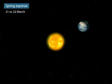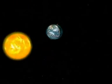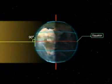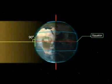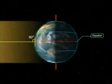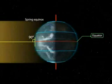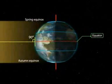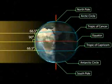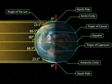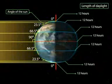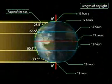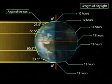Spring Equinox — On the 21st or 22nd of March, the overhead sun is over the equator. The equator receives the largest amount of solar radiation. At this time, the northern hemisphere is in the spring equinox, while the southern hemisphere is in the autumn equinox. The angle of the sun decreases towards the poles. On this day, the two hemispheres receive a similar amount of solar radiation, and the length of day and night is the same at all places on the Earth.